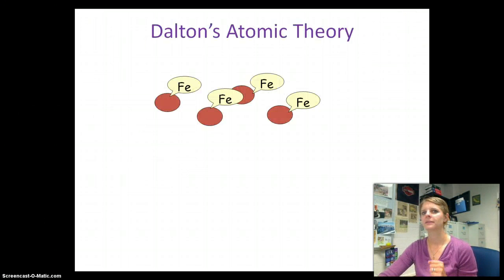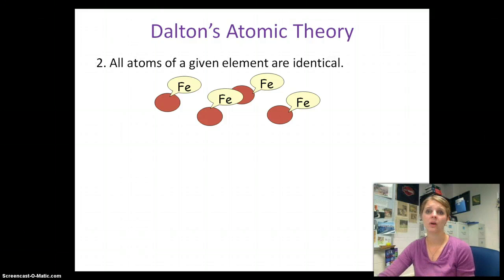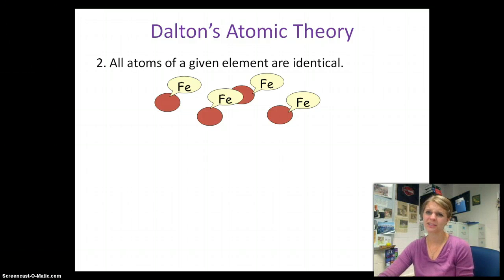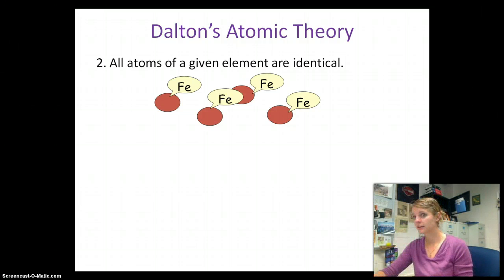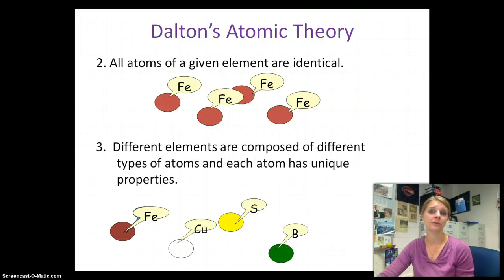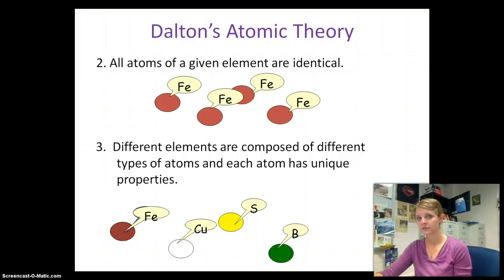What makes Dalton's theory a bit different is idea number two: all atoms of a given element are identical. Actually, Democritus thought this too. So if you have iron, the next iron atom will be exactly the same. Where it starts getting different from Democritus is number three: different elements are composed of different types of atoms, and each atom has a unique property. So iron is different than sulfur — they have different properties, so they must be different atoms.